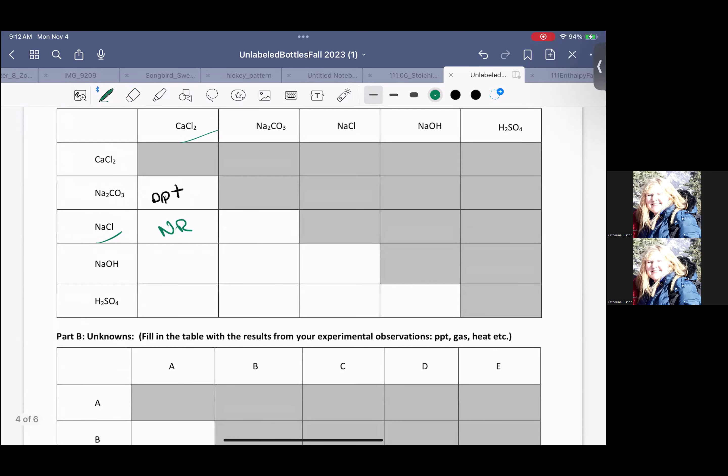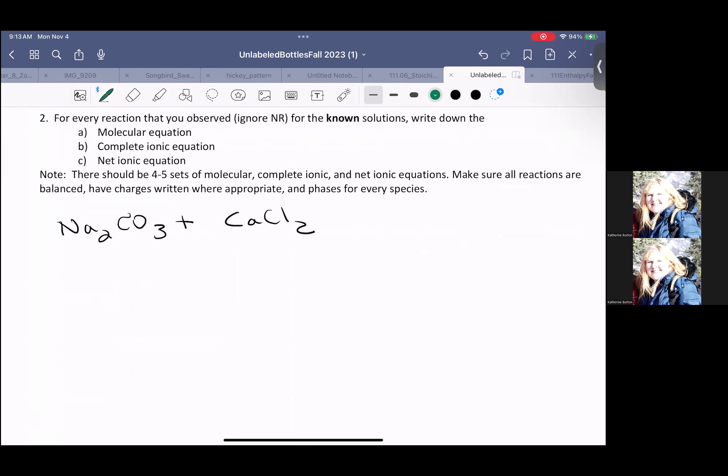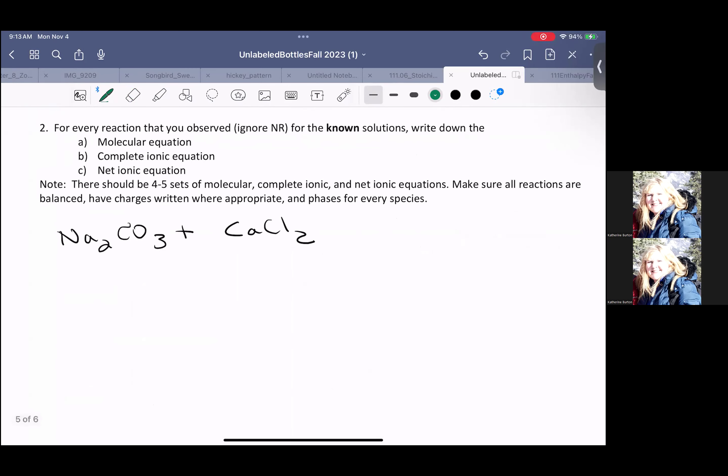So for example, I think everyone got a precipitate when they reacted calcium chloride with sodium carbonate. So let's write the reactions for that one. When we're looking at this, we want three different reactions. Now how these are named is really text dependent, but nonetheless, we're going to use what we call a molecular equation.